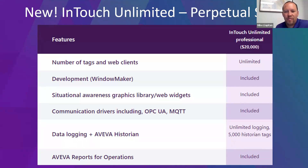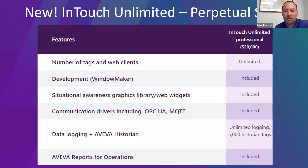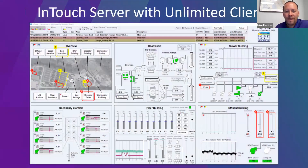Unlimited clients from a single server are included, along with development, all situational awareness graphics for modern user interfaces, and all communication drivers. The Aviva Historian is included with 5,000 historian tags and historian clients — you can embed historian client trends inside InTouch with unlimited clients. Aviva Reports is also included, which is a highly user-friendly reporting tool that works natively with the Aviva Historian, InTouch alarms, SQL databases, and CSV files — all for a one-time cost.